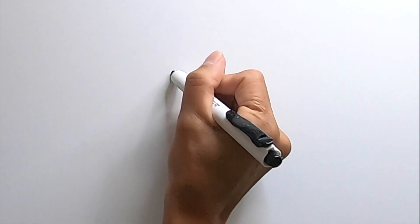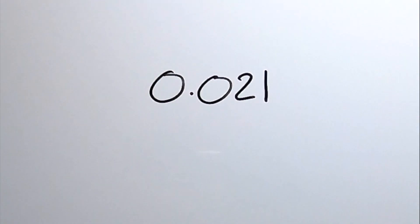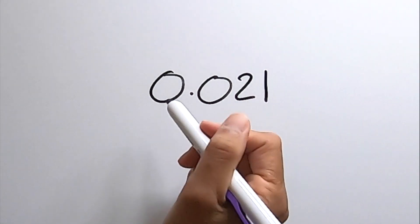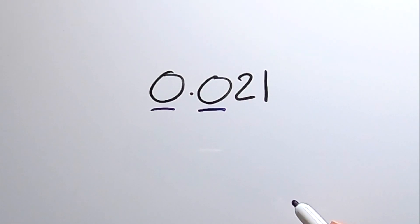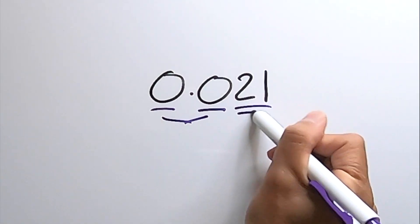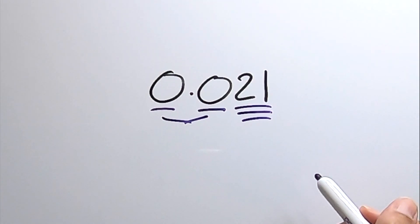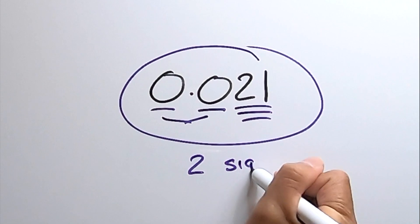Let's look at a decimal: 0.021. How many sig figs does this number have? This zero has to be written based on convention of writing decimals, and this zero also has to be written because it's a placeholder in the decimal. So these two are non-significant figures. But the 2 and 1 are non-zero numbers, so they are indeed significant figures. So this number only has two sig figs.